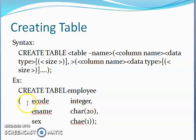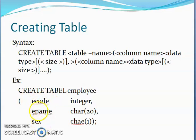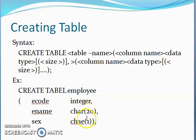An example is CREATE TABLE employee, with columns E code, E name, and sex — everything is the columns of the table. E code is integer. E name is character. If it is character, then we want to give the size — it is 20.